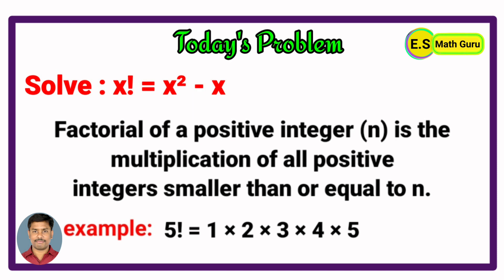positive integers less than and equal to 5. It means 5 factorial equals 1 into 2 into 3 into 4 into 5.